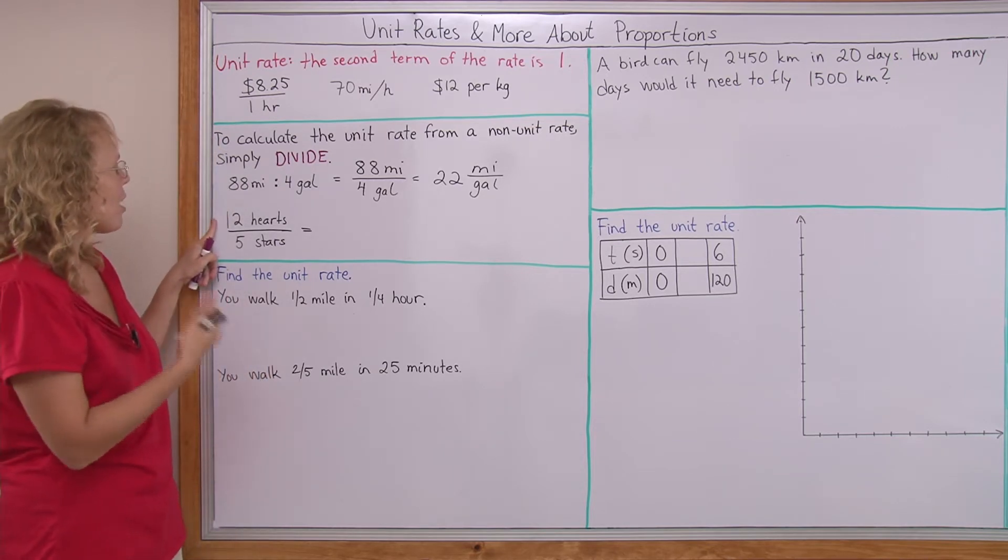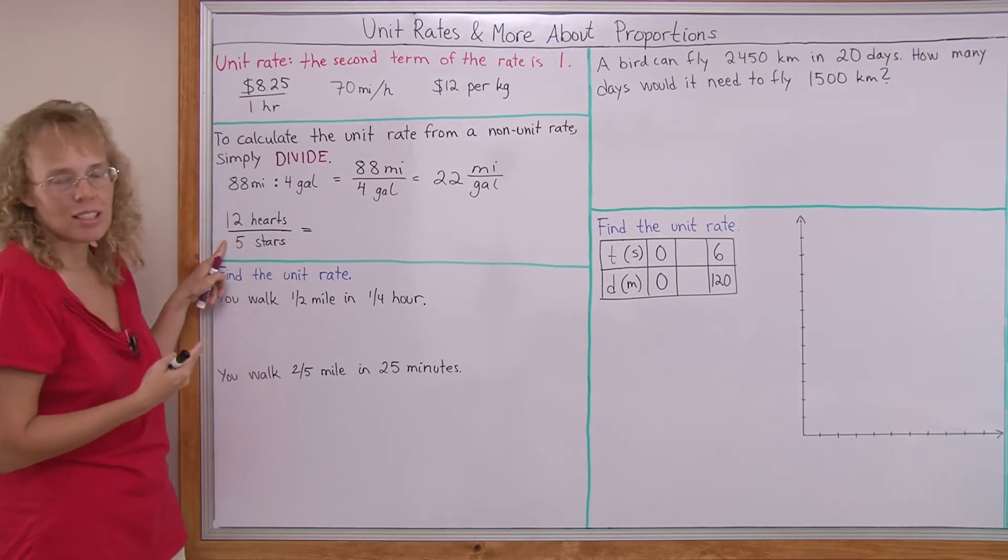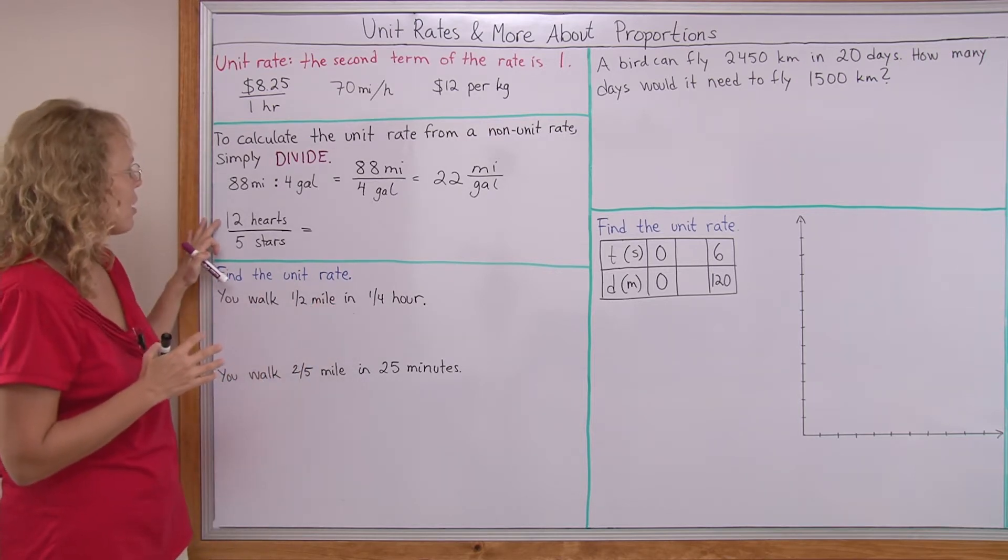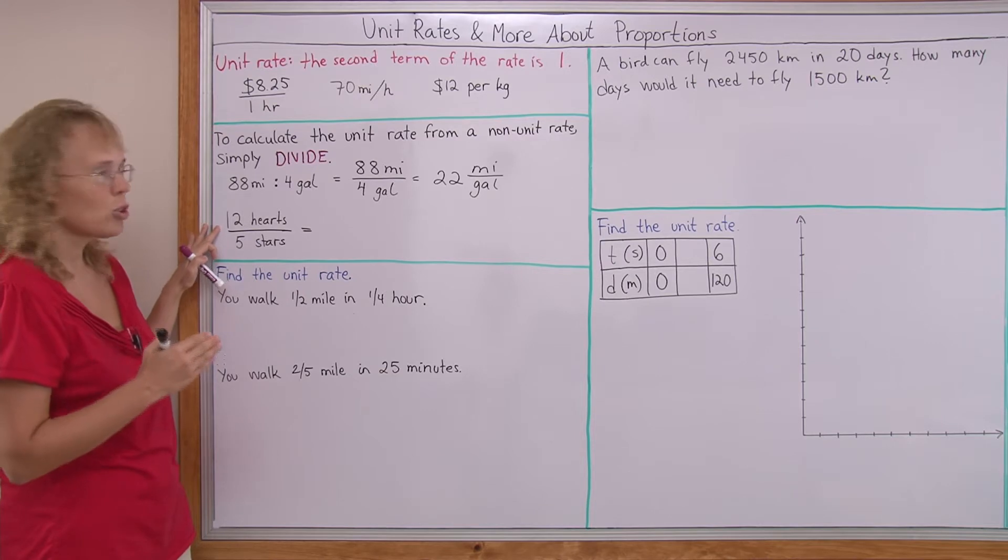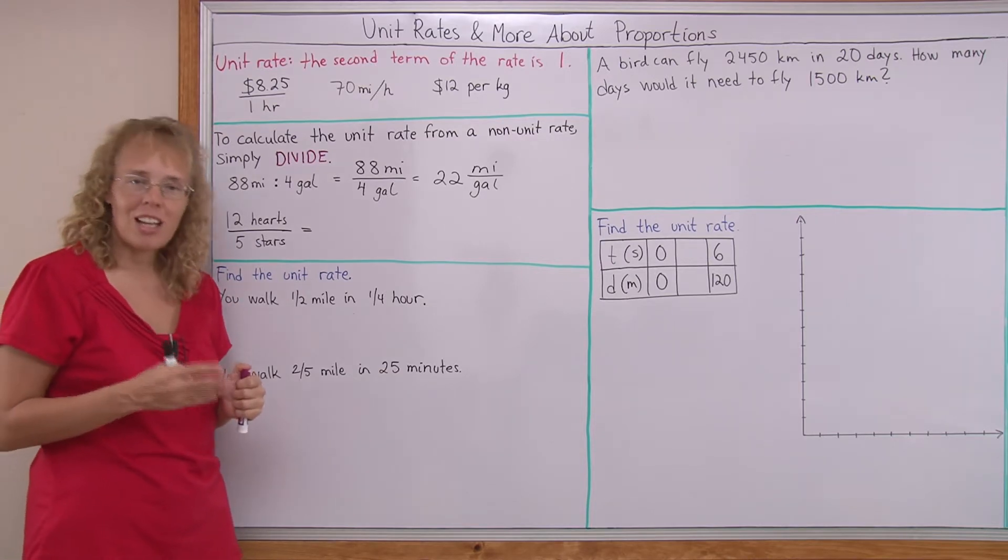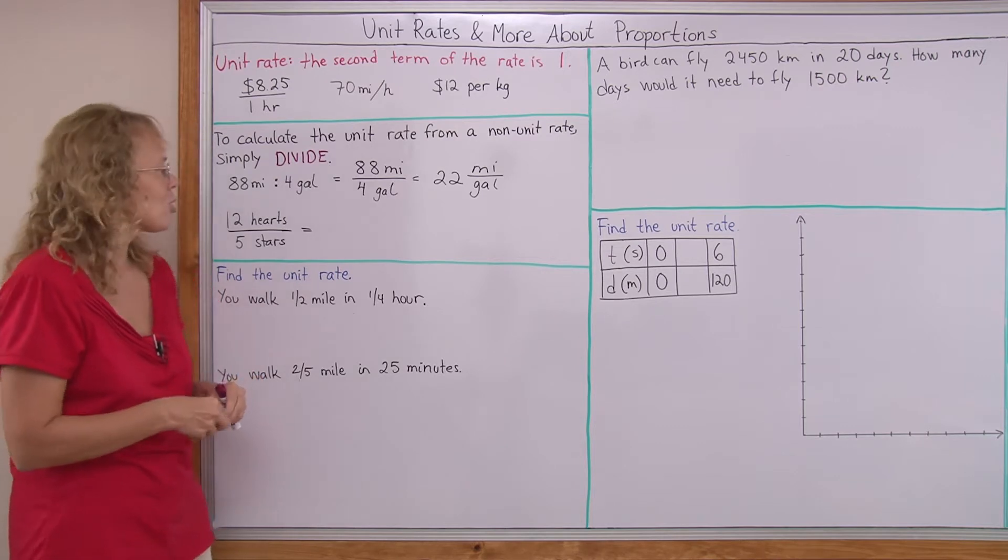Or if we have 12 hearts to 5 stars. Let's say you're making a pattern and you are drawing 12 hearts to each 5 stars. It's not that you really want to calculate a unit rate for this situation, but you can.